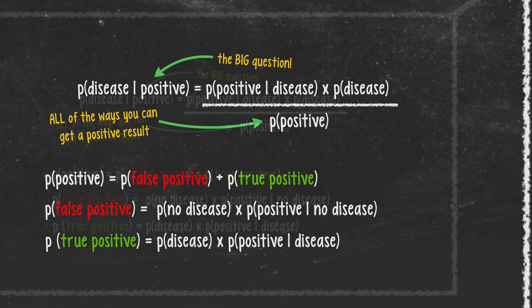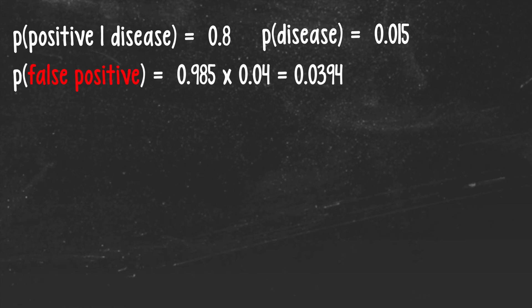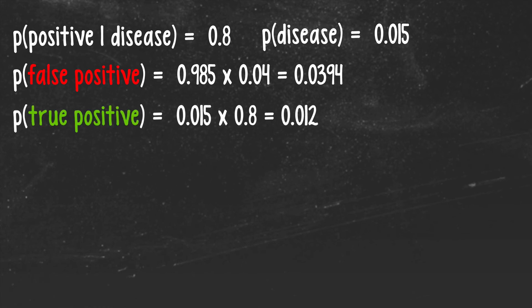So let's start plugging in the numbers from our ovarian cancer example and see what we get. We know that the test is 80% accurate in women who actually have the disease so the probability of a positive test result given the presence of the disease is 0.8. We also know that ovarian cancer affects about 1.5% of women so the probability of a woman having the disease is 0.015. The probability of a false positive is the probability of no disease, 98.5%, multiplied by the probability of still getting a positive test result, which we know is 4%.